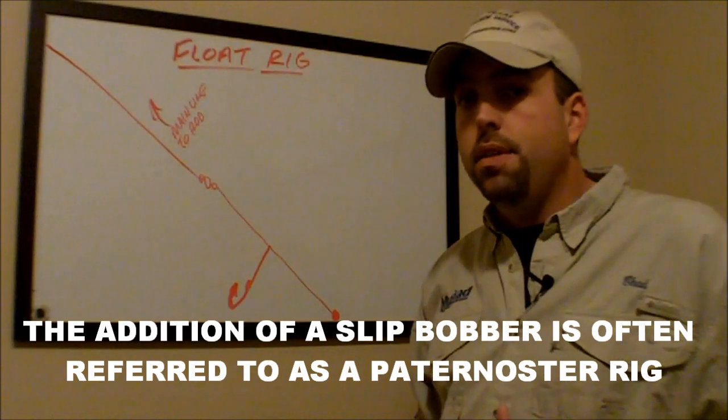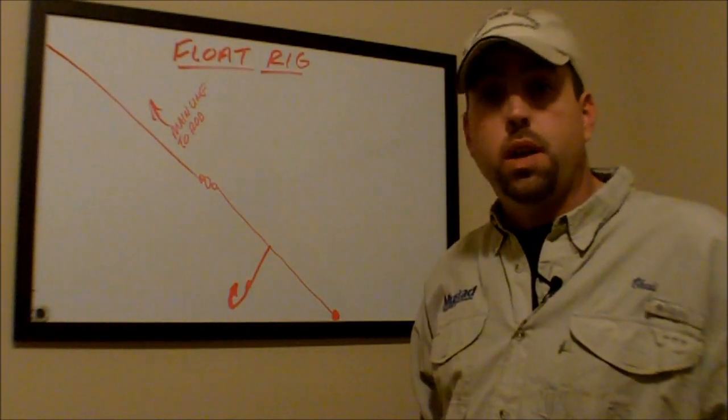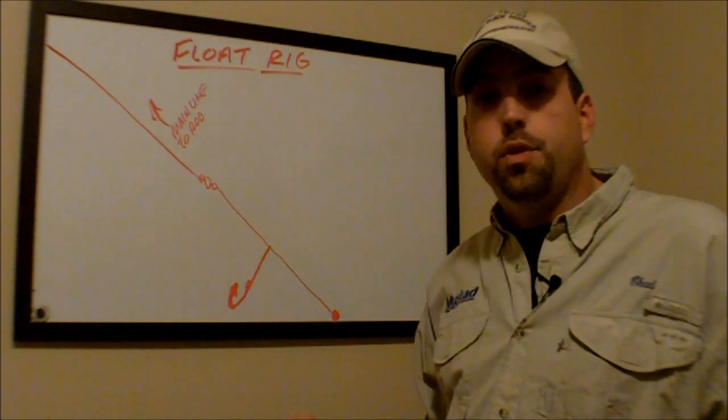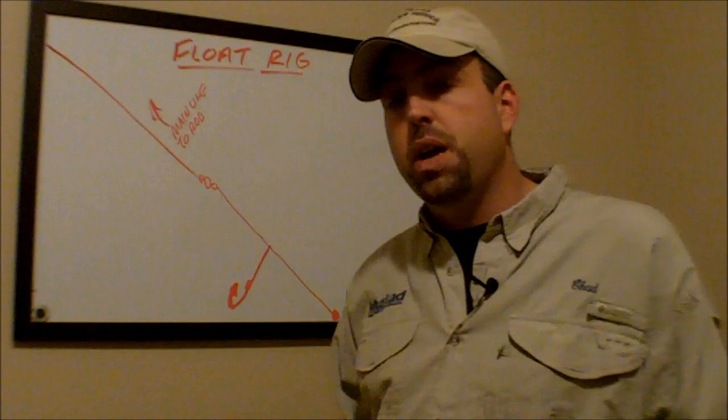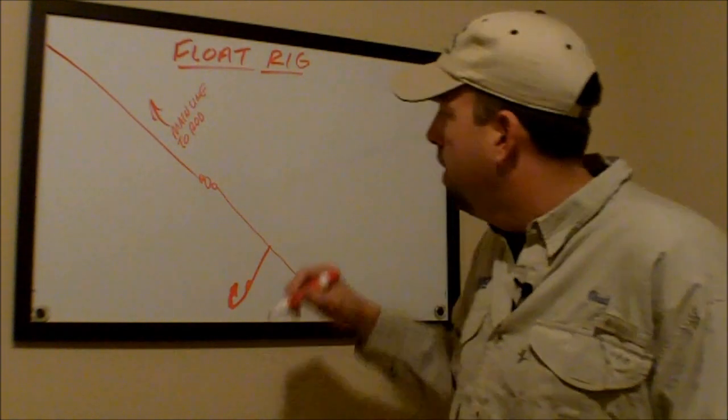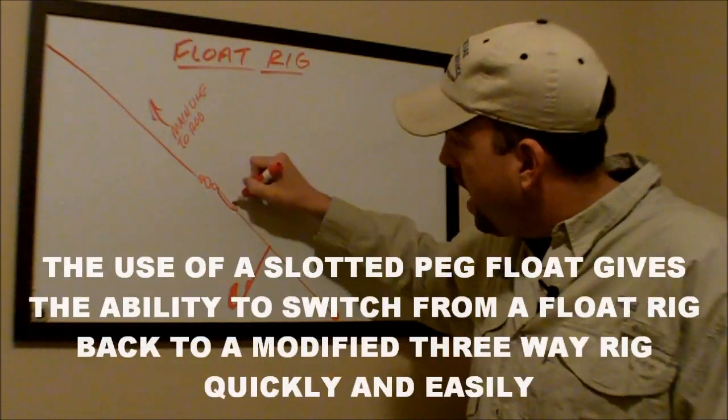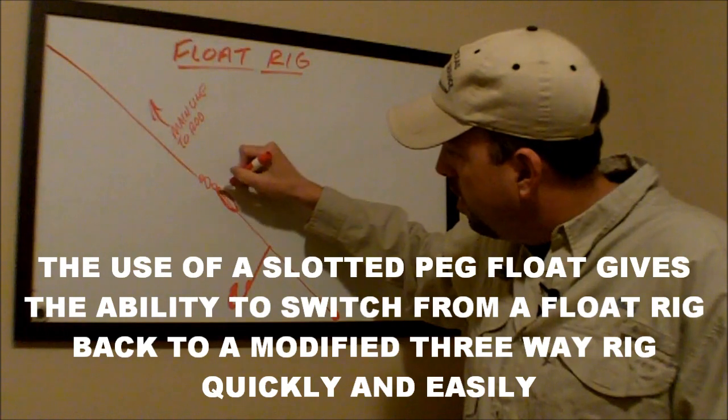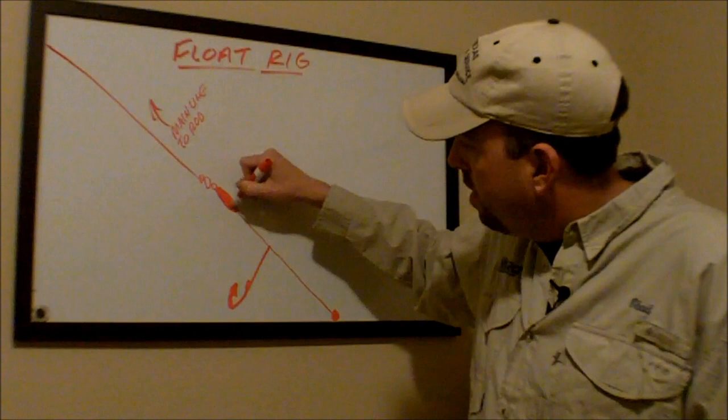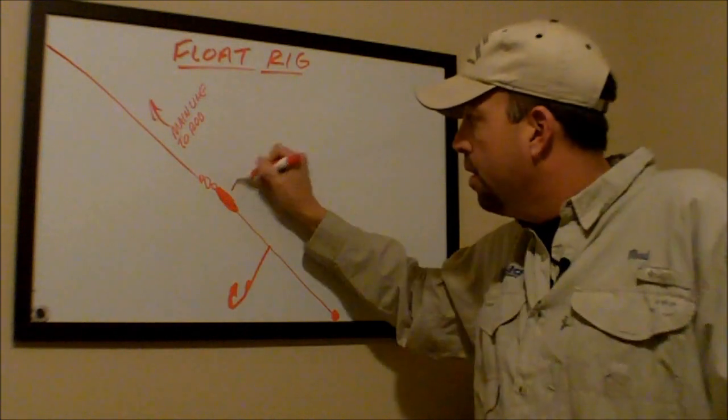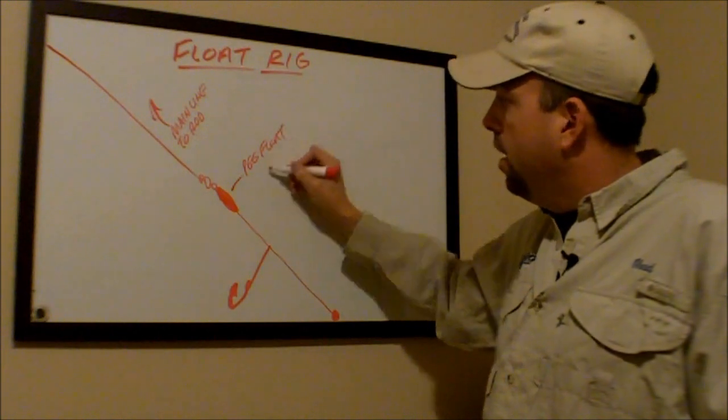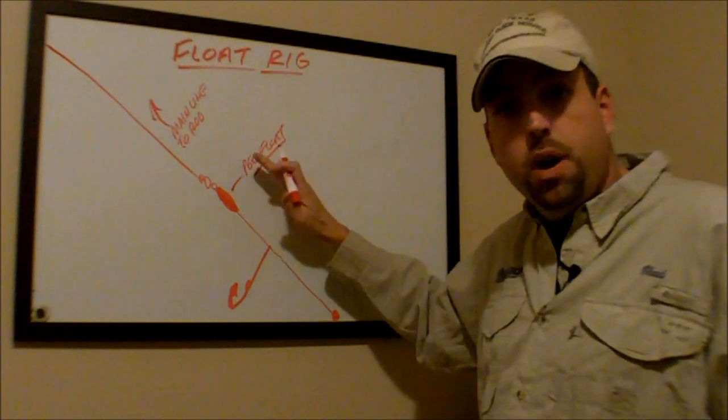I've tried it both ways, and the slip bobber just seems like overkill to me. So I've always used the peg floats for this, but I use a much larger peg float than I'll use on a Santee rig. I use about a three-inch peg float. And what you do is just add that peg float here below your barrel swivel to this rig.